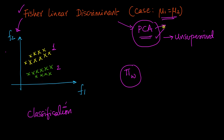In PCA, our objective is to maximize the projected variance. Here, the objective is to separate these two classes. We are given a bunch of points with class labels 1 and 2. Now, imagine if I project all these points onto this axis — all these yellow points will get projected to values from here to here, and all the green points will get projected to values from here to here. When I project all these yellow and green points onto this feature or line, they're completely overlapping, so I'm not able to separate them.